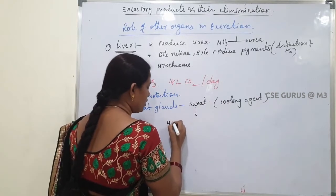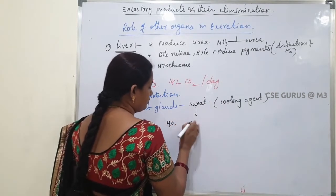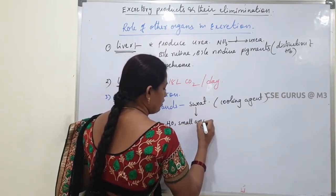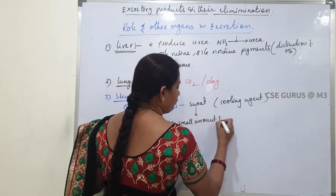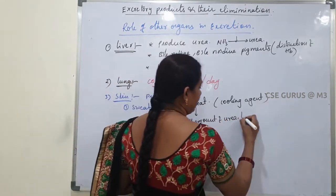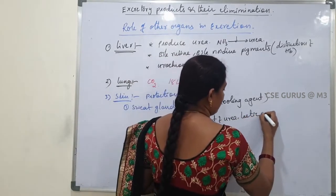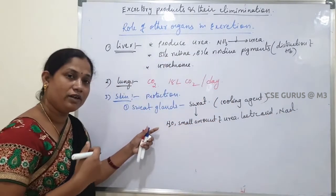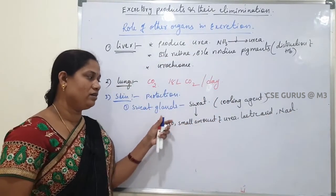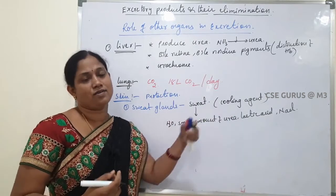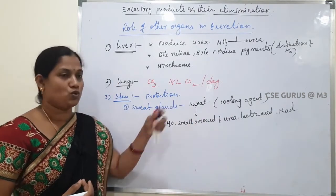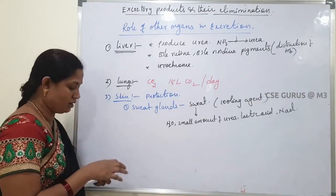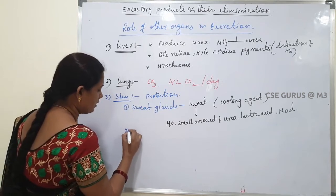In sweat, water is present along with a small amount of urea, lactic acid, and sodium chloride salts. These are eliminated to the outside through sweat. That is why sweat glands help in the excretory function.